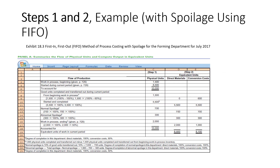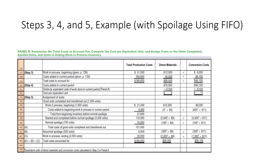Continuing with the same example, the FIFO method calculations are similar to the weighted average method, except that units to account for keep normal and abnormal spoilage units separate as well as the units from the prior period. This ensures the appropriate costs are used based on the period of production. Notably, the FIFO method keeps the cost of beginning work-in-process separate and distinct from the cost of work done in the current period. All spoilage costs are assumed to relate to units completed during the period, using current-period unit costs.